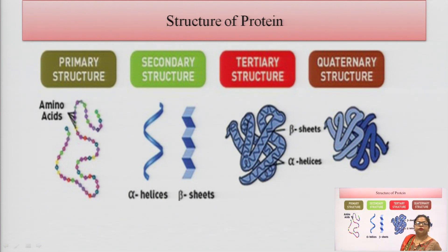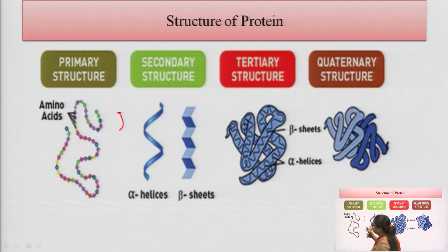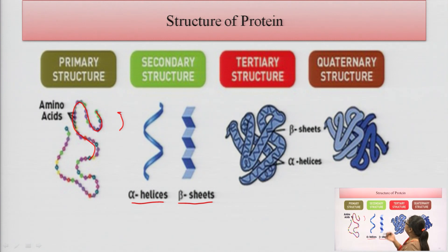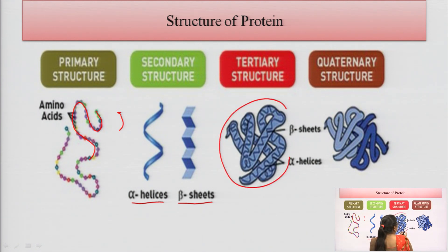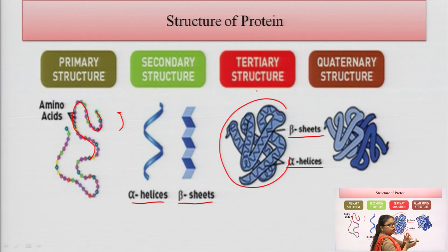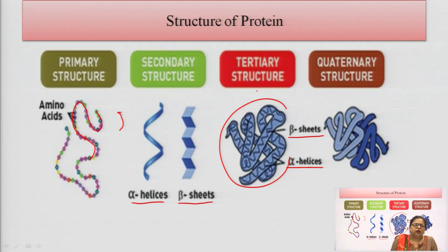In summary of protein structure: primary structure is a single amino acid chain; secondary structure has alpha helix and beta helix joined together; tertiary structure is a coiled form like the cord of a telephone; and in quaternary structure, this coiled form is attached to a prosthetic group to form the complete quaternary protein structure.